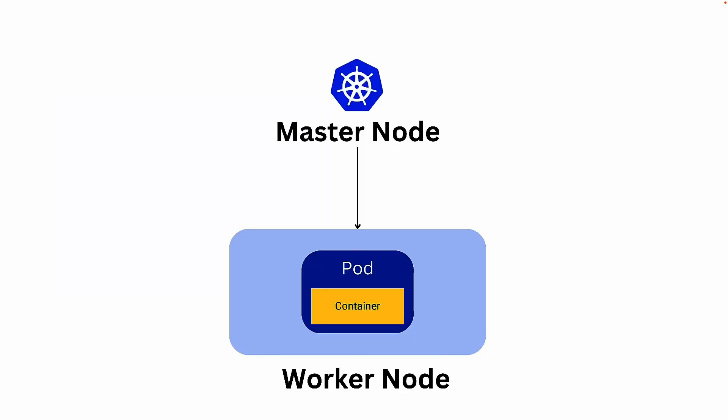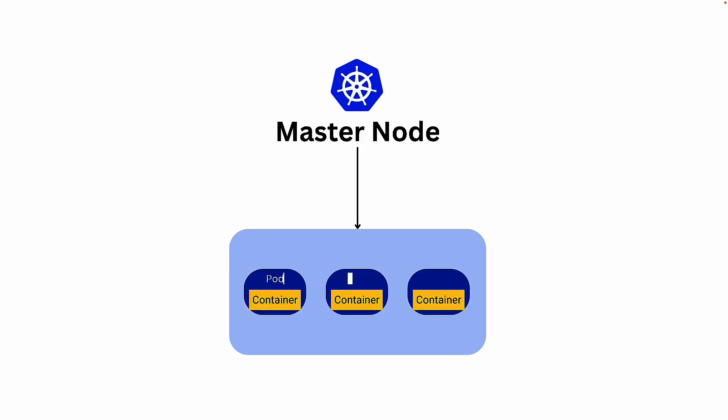In Kubernetes, we have a concept called master node and worker node. The master node always checks all the worker nodes. In this example, I have one master node and one worker node. In the worker node, I have a pod and inside the pod I have one container. If I want to increase my workload, I will create more pods or clone the existing pod to create multiple pods so that my increased workload can be distributed between them.